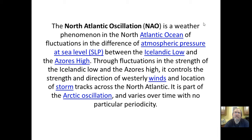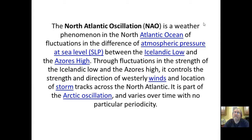The NAO involves fluctuations in the difference of atmospheric pressure at sea level — called sea level pressure or SLP — between the Icelandic Low and the Azores High. Through fluctuations in the strength of these systems, it controls the strength and direction of westerly winds and the location of storm tracks across the North Atlantic.